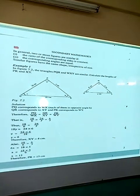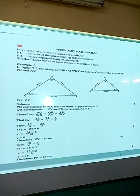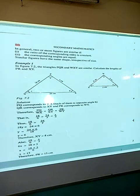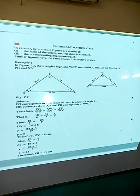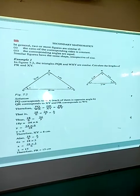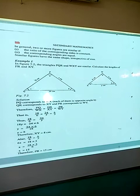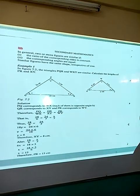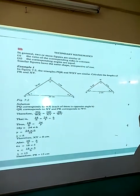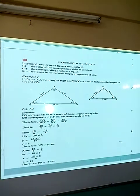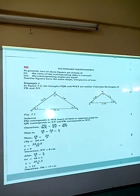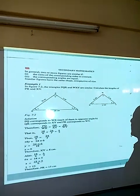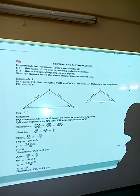The example in figure 7.2 shows two triangles. The figure below shows triangles PQR and XYW, which are similar. Calculate the length of PR and XY in centimeters. When you look at the triangles, PQ corresponds to WX.